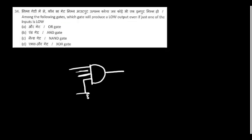Among the following gates, which gate will produce low output even if just one of the input is low? Assume we have an AND gate with two inputs. If any one of the input is low, that is connected to ground, then the output is going to be low. So the answer is AND gate.